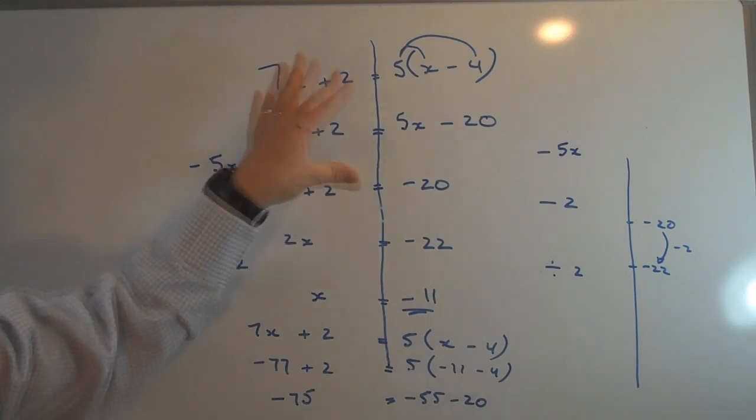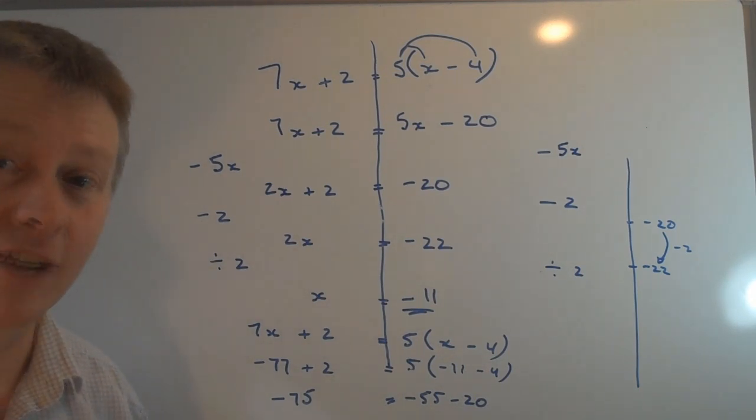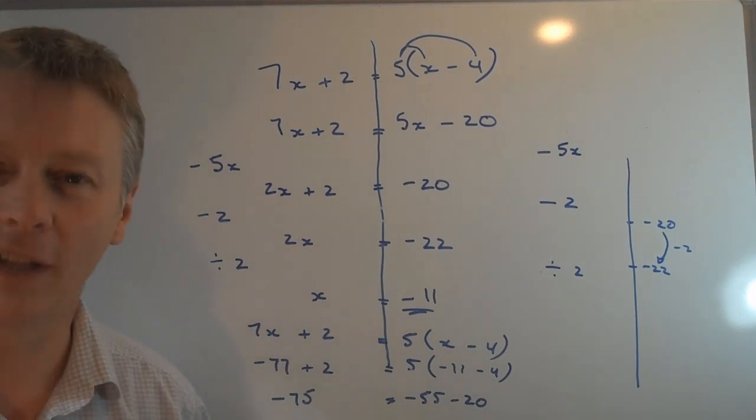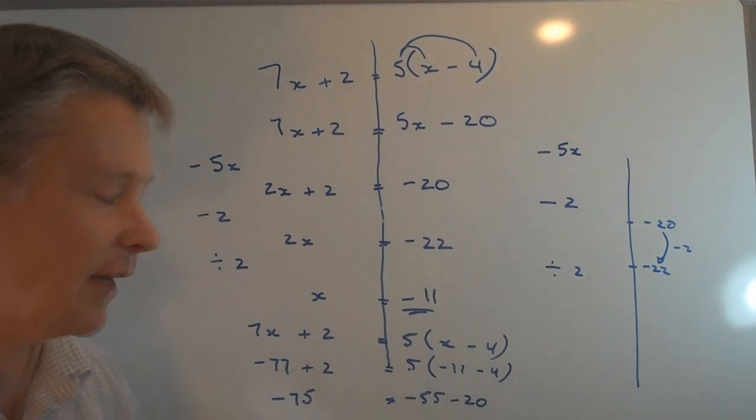This side is minus 75 and this side is minus 75, so it is true for the purposes of this particular equation that X equals minus 11. And that's about as complicated as it's going to get for GCSE, you're going to be looking at roundabout level C perhaps level B, that sort of level.